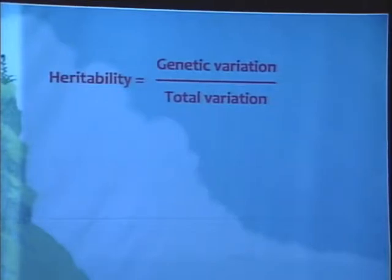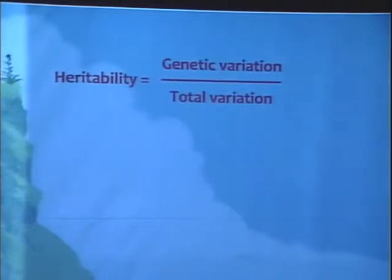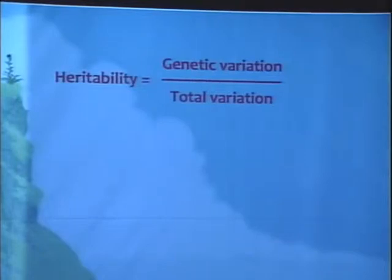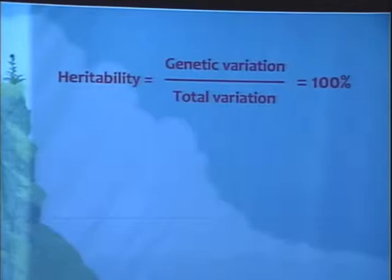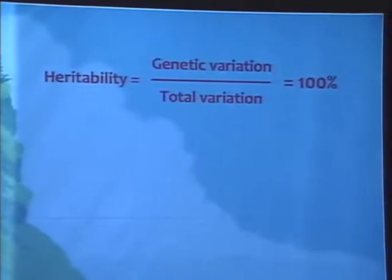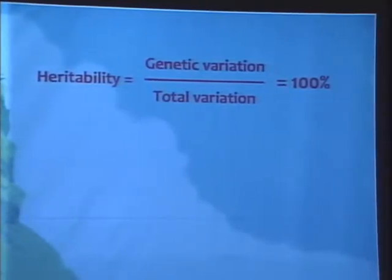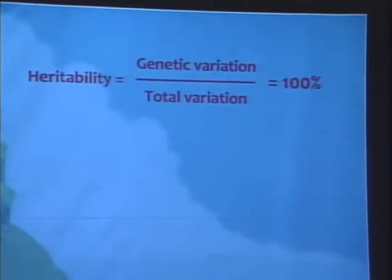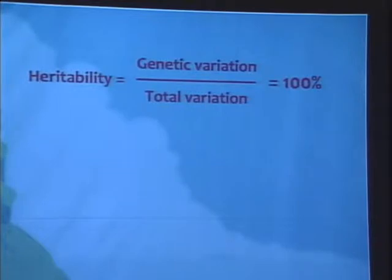Because he had been very careful about controlling the environment in which he planted these seven individuals, he knew that none of that variation was due to environmental differences — he made sure every plant was treated exactly the same way. So he calculated that all of this variation, because these are seven different genotypes, was due to genetic variation. So it has a heritability of 100%.